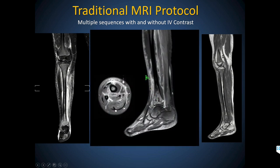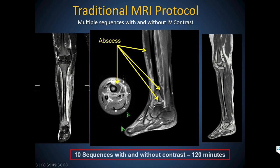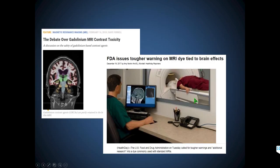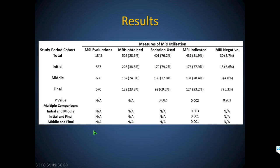Traditional MRIs done with and without contrast using multiple sequences — we used to think contrast was necessary to see abscesses and guide surgical decision-making. One scan at our center took two hours and was 10 sequences done with and without contrast. There's controversy about the continued use of contrast at the rate we were using it — nearly 100% of scans leading up to 2012. We decided to implement a better approach.